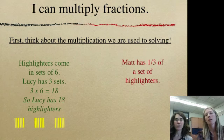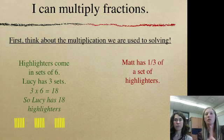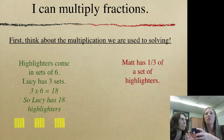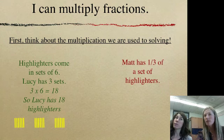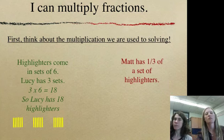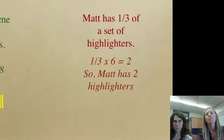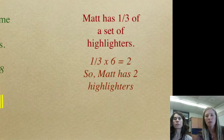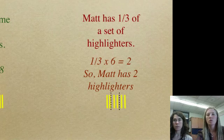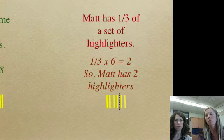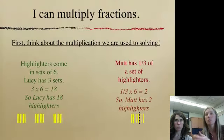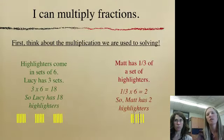Now we've got Matt. He has a third of one set of highlighters. So we're taking that one set of six, and he has one third of that. What you may not know is the word 'of' actually means multiply, and that is going to be very important. So one third of six means one third times six, and I'll bring up our little picture. You can see the six divided into thirds, and he has one third of that, which would be two. Now we're going to go into teaching you how to actually multiply those numbers out.